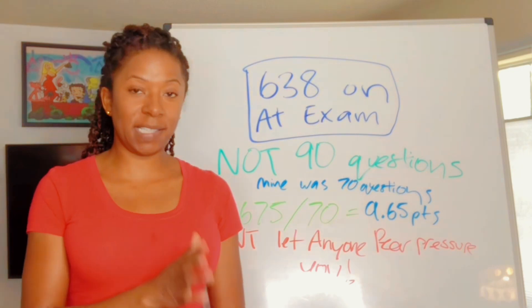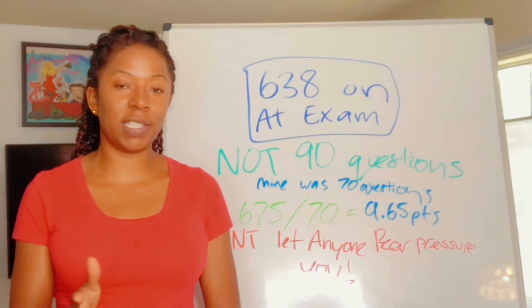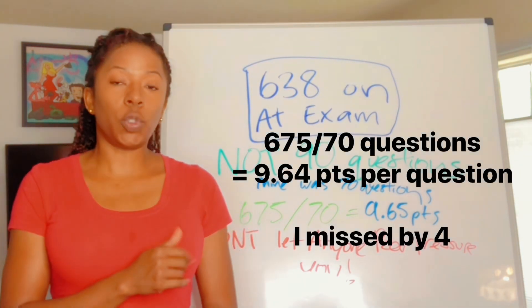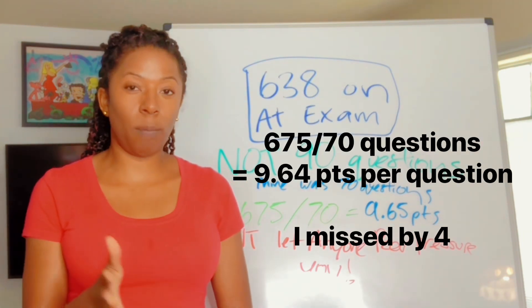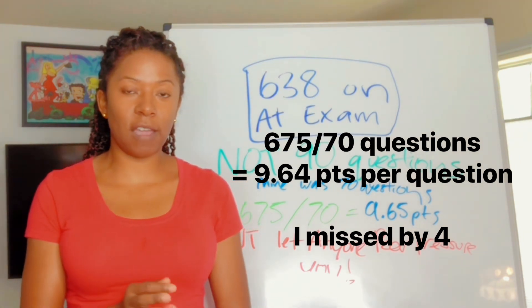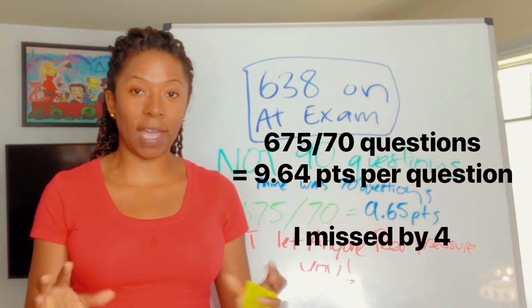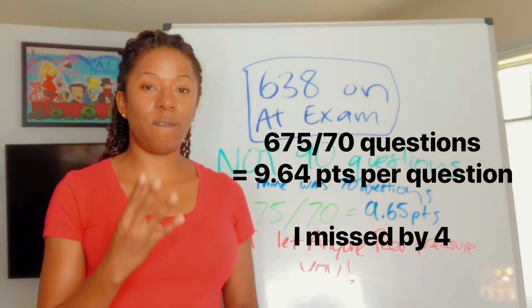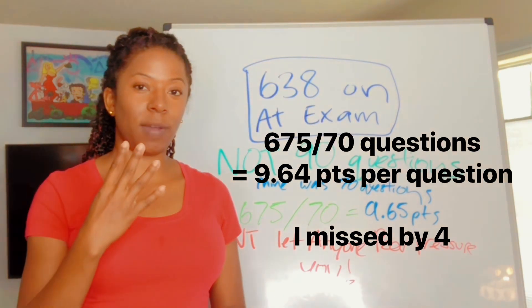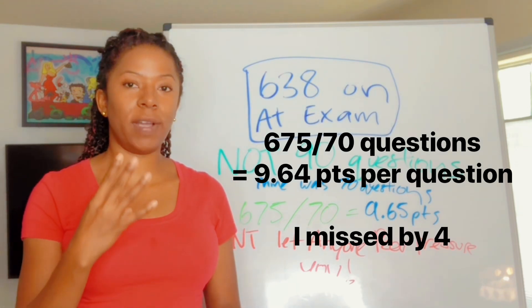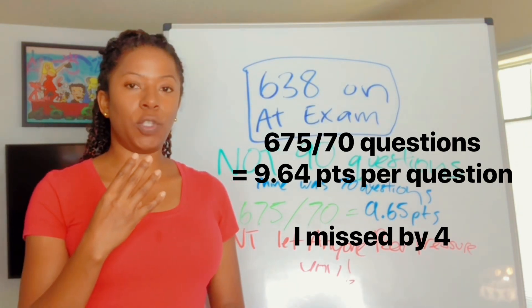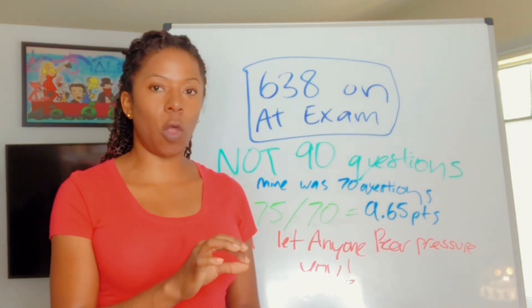So, if you weighted 675 divided by 70 questions, that means if we were to do it per question, you only get 9.64 points per question. So, technically, if we were to mathematically look at it, I missed that test by 4 questions. And I just want you to think about that. 4 questions is a difference between you paying $250 again.